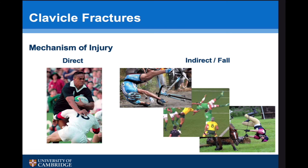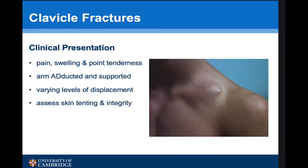The mechanism of injury tends to be a direct injury or a fall, generally from a height. Clinically, patients often have pain and swelling and point tenderness over the site of the fracture. The arm is generally held adducted and supported, and there tends to be varying levels of displacement.